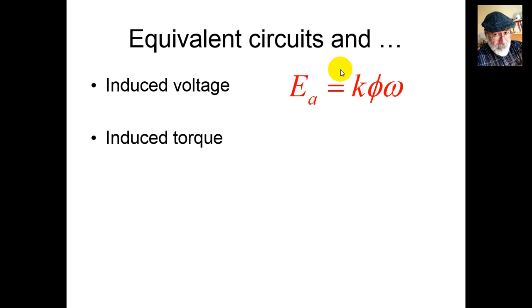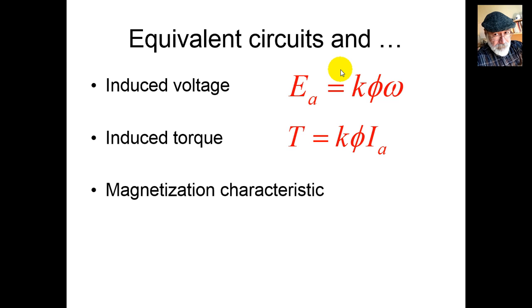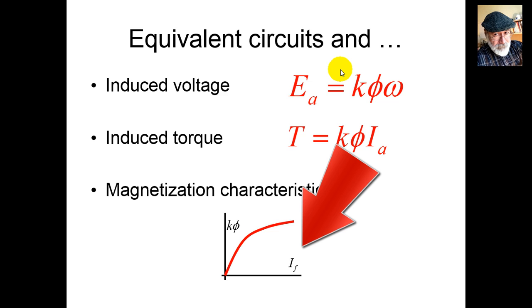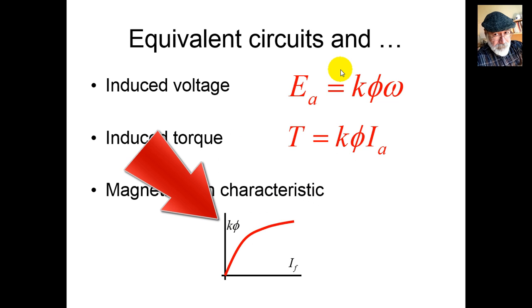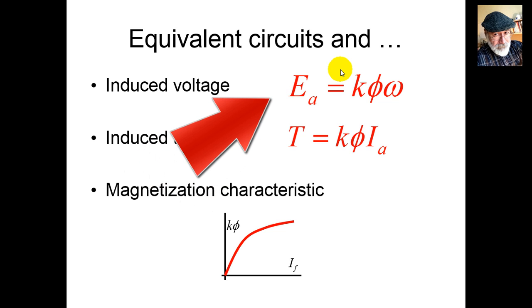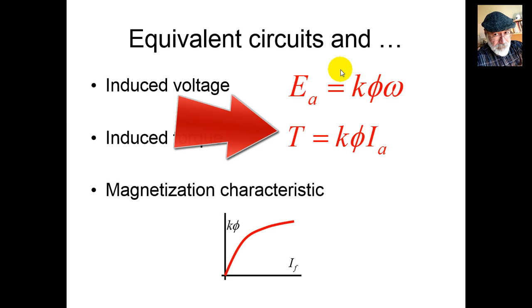The induced torque is proportional to the flux and to the armature current I_A, scaled by K5. K5 comes from the magnetization characteristic. We find the field current IF, use the magnetization characteristic to find K5, and then with the formulas we find the induced voltage EA in the armature and the induced torque T.